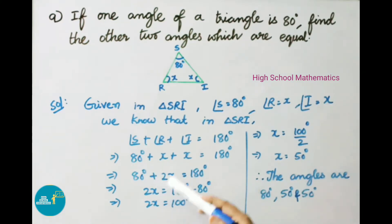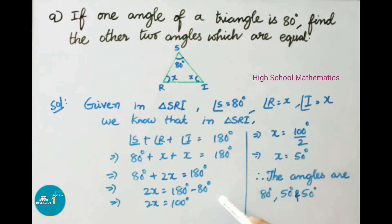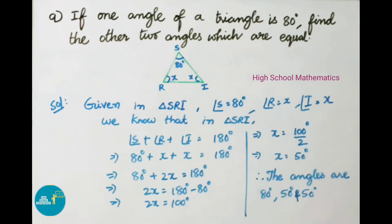That gives 80 degrees plus 2x equals 180 degrees. Transposing, 2x equals 180 minus 80, that is 100 degrees. Dividing by 2, x equals 100 divided by 2, so x equals 50 degrees. Therefore the angles of the given triangle are 80 degrees, 50 degrees, and 50 degrees.